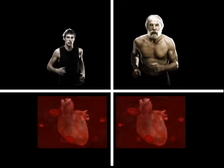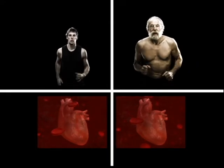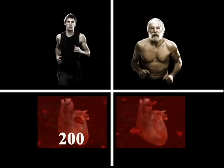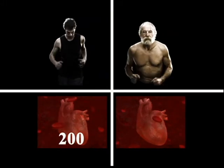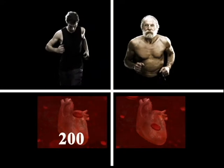For a 20-year-old, the maximum number of heartbeats should not exceed 200 beats per minute. For a 60-year-old, the maximum number of heartbeats should not exceed 160 beats per minute.